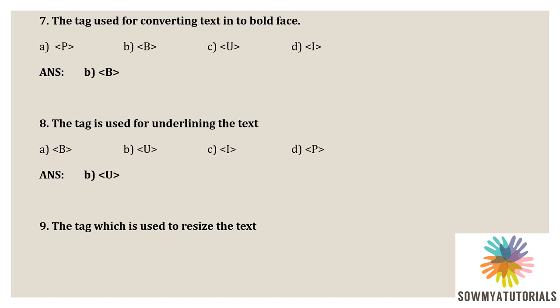The tag which is used to resize the text. Option A: B. Option B: H1. Option C: U. Option D: P. The <b> tag is used for bold text. H1 is the resizing text tag — H1 is the highest font size and H6 is the lowest font size. The correct option is H1, used for resizing text. U is underline and P is paragraph.